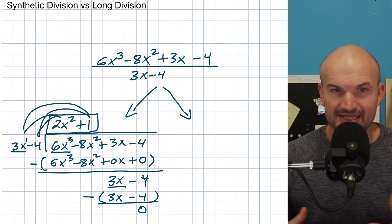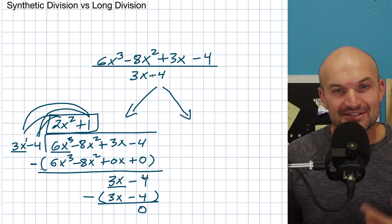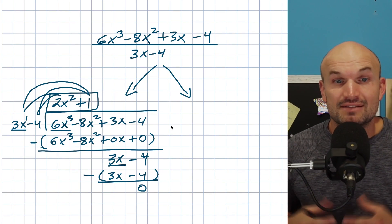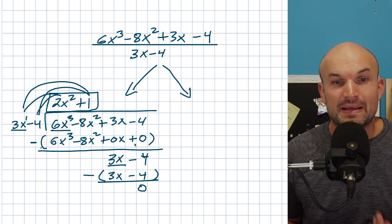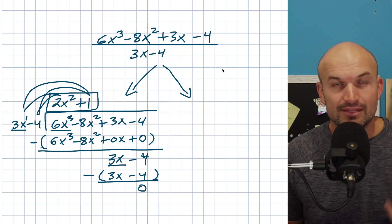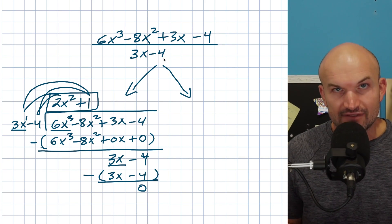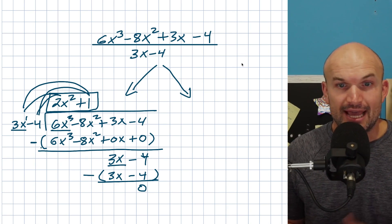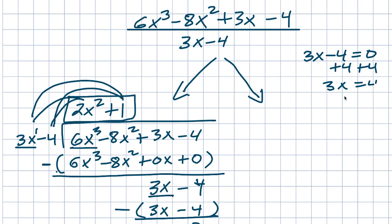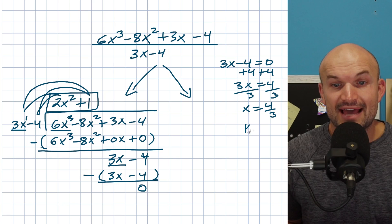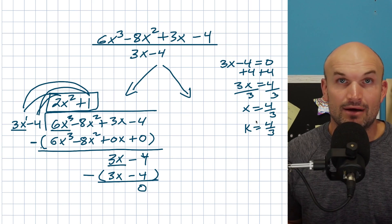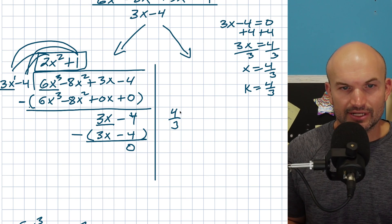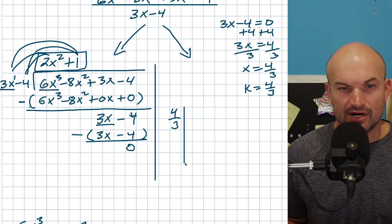Synthetic division is a little different because it's not pure division — it's synthetic. It's just a tool. To apply it, we first identify the value k by setting our divisor equal to zero and solving. Whatever x equals is our value k. Solving gives x = 4/3, so k = 4/3. We place k on the outside and then set up an inverted long division bar.